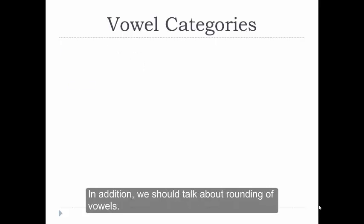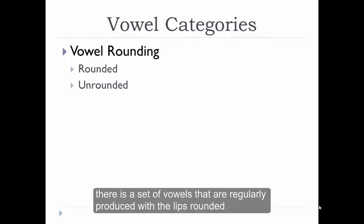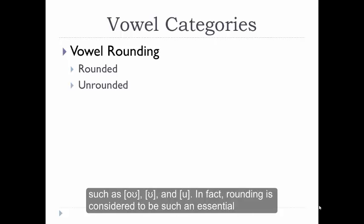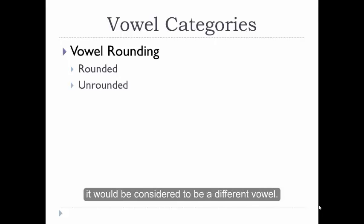In addition, we should talk about rounding of vowels. Although the main articulator for vowels is the tongue, there is a set of vowels that are regularly produced with lips rounded in addition to the articulation of the tongue. In English, these vowels are all back vowels, such as O, U, and U. In fact, rounding is considered to be such an essential component of these vowels that if one of these vowels is produced without rounding, it would be considered to be a different vowel.